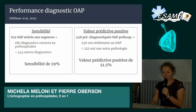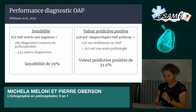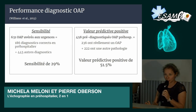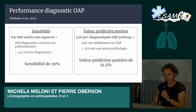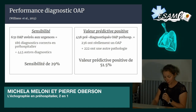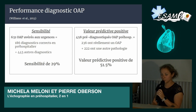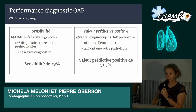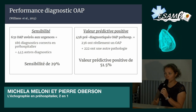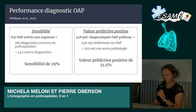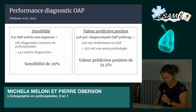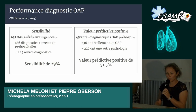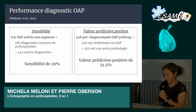Il y en avait 186 qui étaient diagnostiqués correctement en préhospitalier. Pour les 445 autres, c'était principalement des problèmes respiratoires non spécifiques et des douleurs thoraciques. L'autre chiffre intéressant, c'est la valeur prédictive positive à 51,5% : au total, 458 patients étaient prédiagnostiqués OAP en préhospitalier, et finalement un peu plus que la moitié — donc 236 — avaient réellement un OAP. On peut imaginer que les ambulanciers n'étaient pas face à des signes très spécifiques d'OAP.